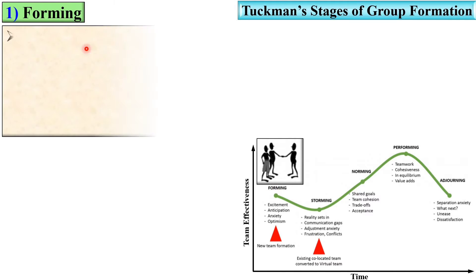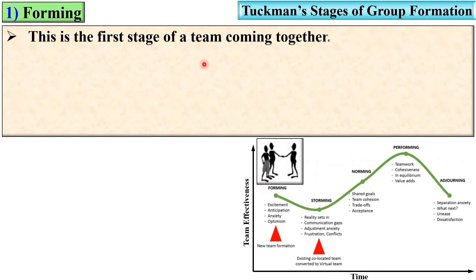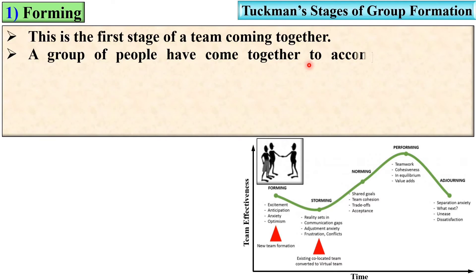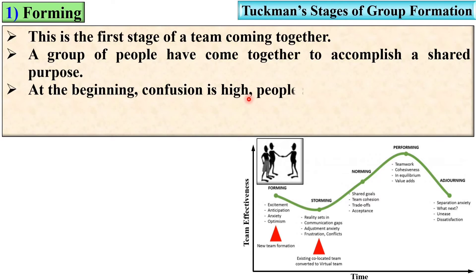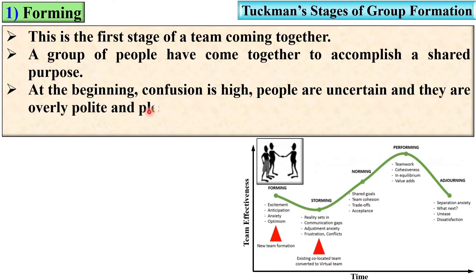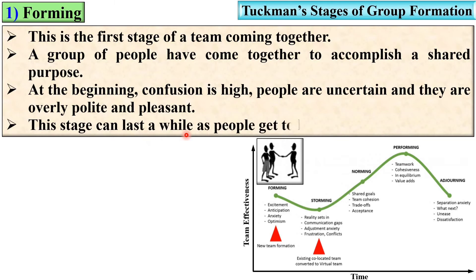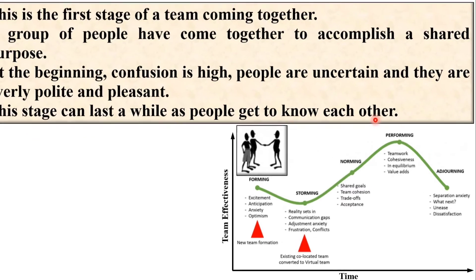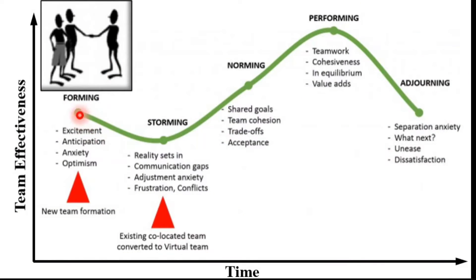The first stage is forming — a team coming together. A group of people have come together to accomplish a shared purpose. At the beginning, confusion is high; people are uncertain and overly polite and pleasant. This stage can last a while as people get to know each other. Characteristics at this forming stage include excitement, anticipation, anxiety, and optimism. This is the starting stage of the new team.